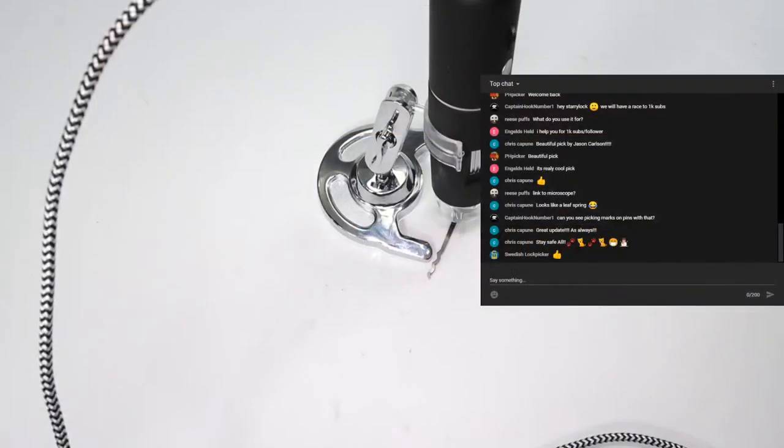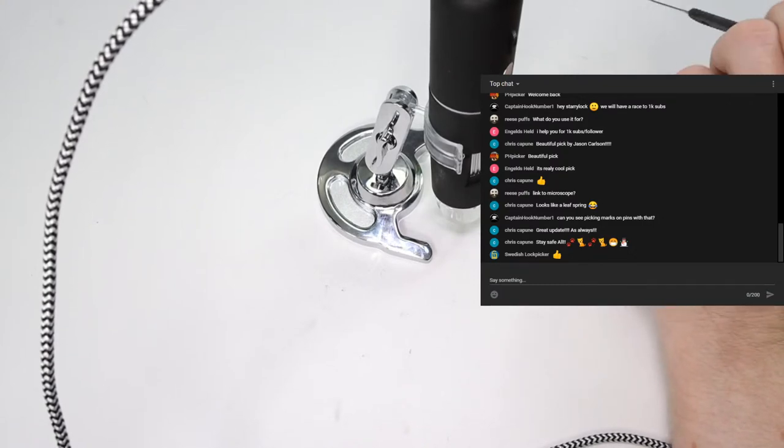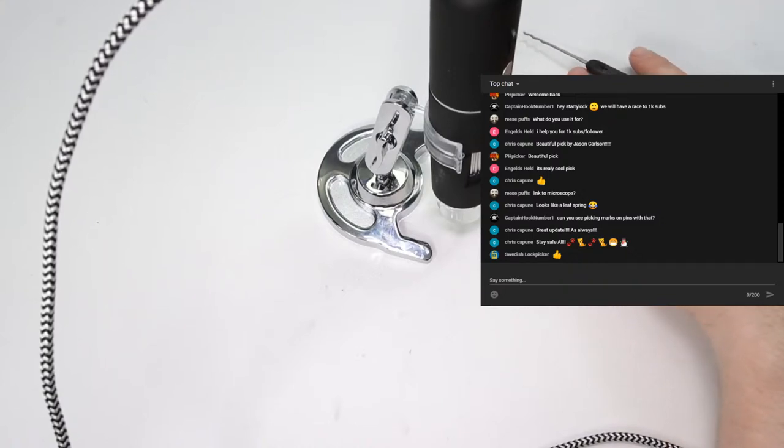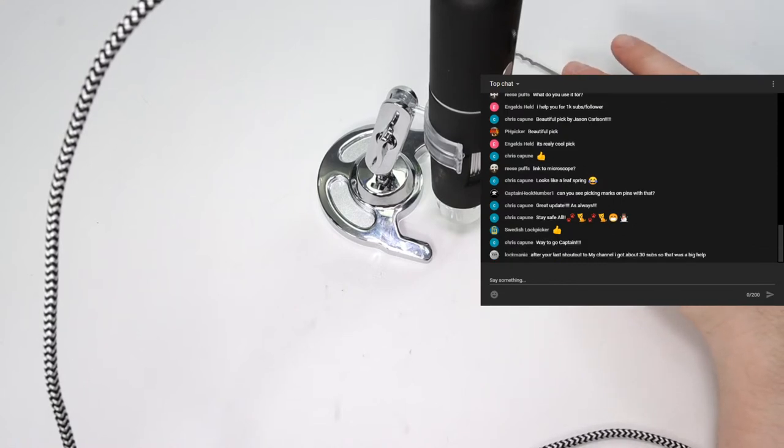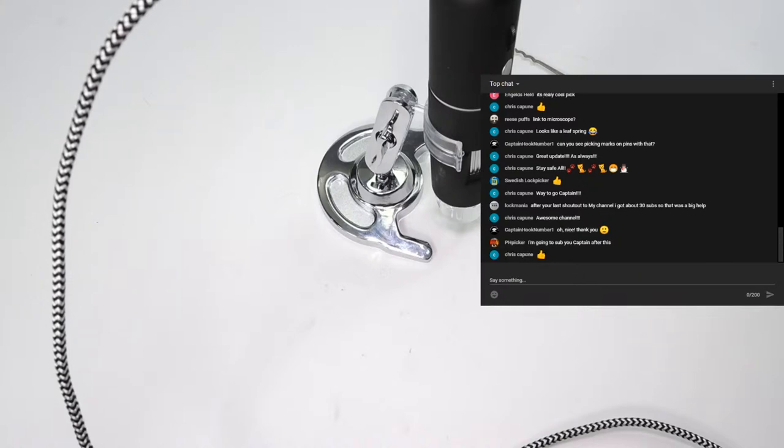That is all I have for you this week. Let's see what Lockmania is sharing. Lockmania is saying after your last shoutout to my channel, I got about 30 subs. That's really cool. I guess technically we could add Lockmania into the race to 1000. Lockmania is a little bit further out, but he really wants to be able to start to live stream. Being able to live stream with the built-in setup that YouTube naturally offers is a really great way to do it.